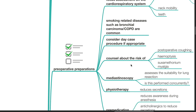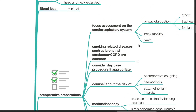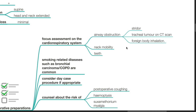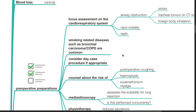Preoperative preparation includes a focused assessment on the cardiorespiratory system. Look out for signs of airway obstruction such as stridor, tracheal tumor on CT scan, and foreign body inhalation. Assess neck mobility and teeth. Smoking-related diseases such as bronchial carcinoma and COPD are common. Consider day case procedure if appropriate.